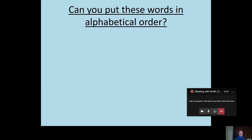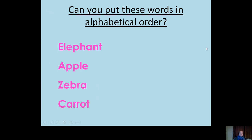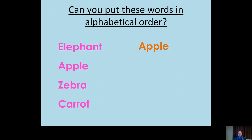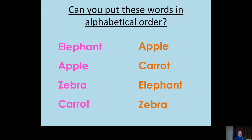To warm up, have a go: can you put these words into alphabetical order? The words in pink: elephant, apple, zebra and carrot. So first, hopefully we've got apple, carrot, elephant, zebra. Take a moment to think about how you did that. What did you look at? Did you start at the end of the word or the beginning? What knowledge did you rely upon to do that?